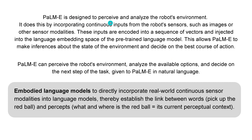PaLM-E is designed to perceive and analyze the robot's environment. Of course we have a vision transformer and a dozen sensors. We incorporate the continuous input from the sensors — images, whatever you have — encode it in a sequence of vectors, and inject these vectors into the language embedding space of the pre-trained language model. This allows PaLM-E to make inferences about the state of the environment continuously and, since it's an LLM where you can go step by step, decide the best course of action.